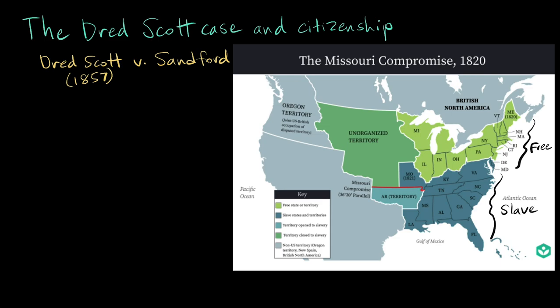In 1820, the U.S. government agreed that to maintain the balance of power between slave and free states as new states entered the Union from western lands, new states below the 36°30' line of latitude would be slave states and above it would be free states. Missouri was the exception — the last slave state to be admitted above that line. This compromise worked to stave off political disunion for 30 years, but by the 1850s, when a whole bunch of new states were set to enter the Union following Mexico's cession of land to the United States, the compromise was starting to fall apart.